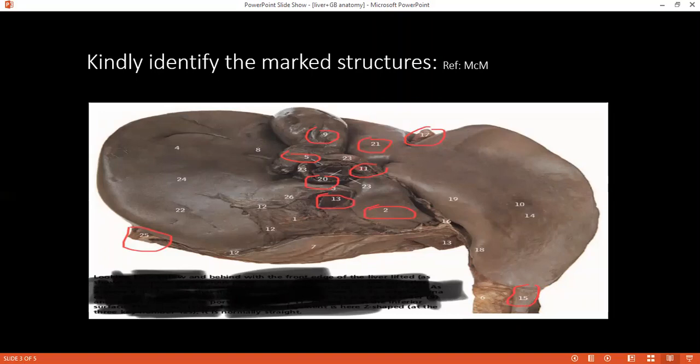Just suppose a person gets stabbed in the epigastrium. Which two organs or what part of liver you can say or which two organs can get injured? This left surface, left lobe of liver and the stomach.